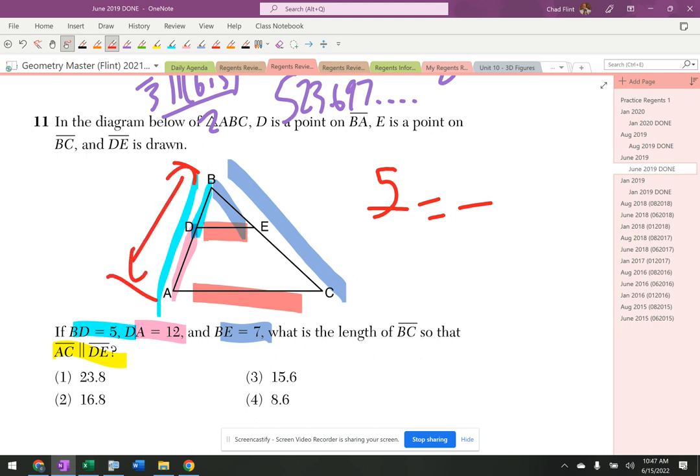This is 17. It's the five and the 12 put together. And then the BE is seven. The X is here. The X is that whole entire side.